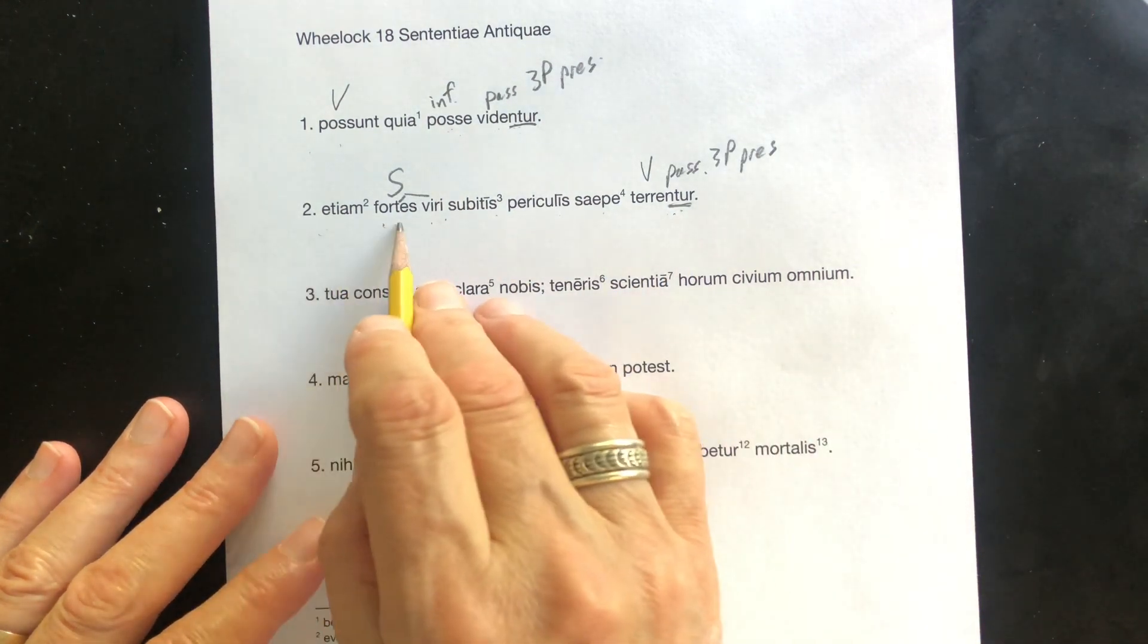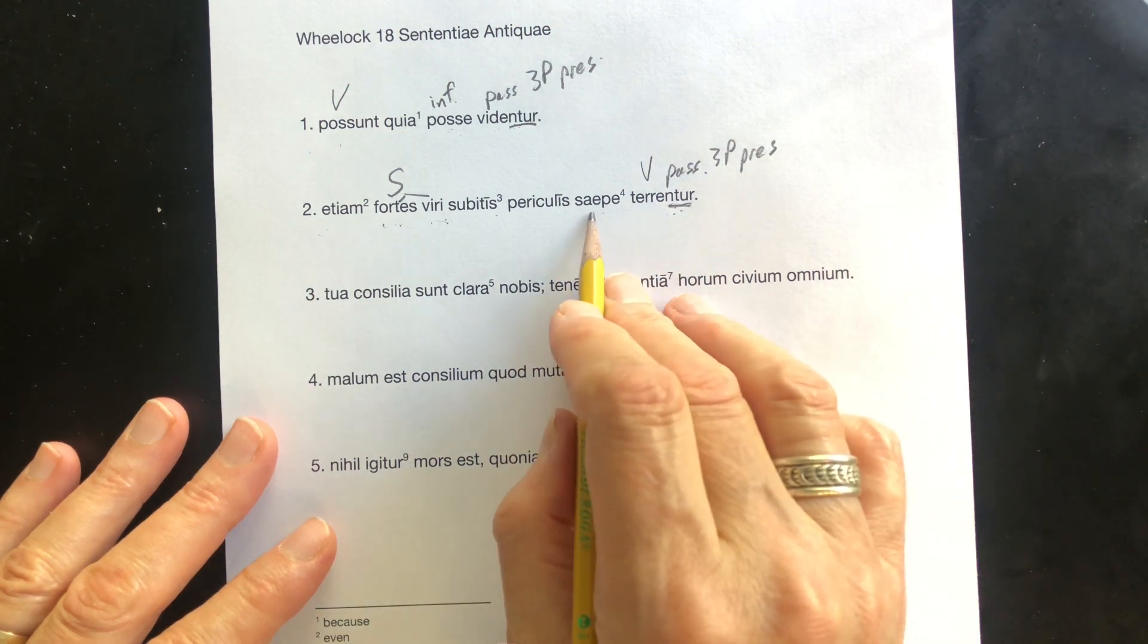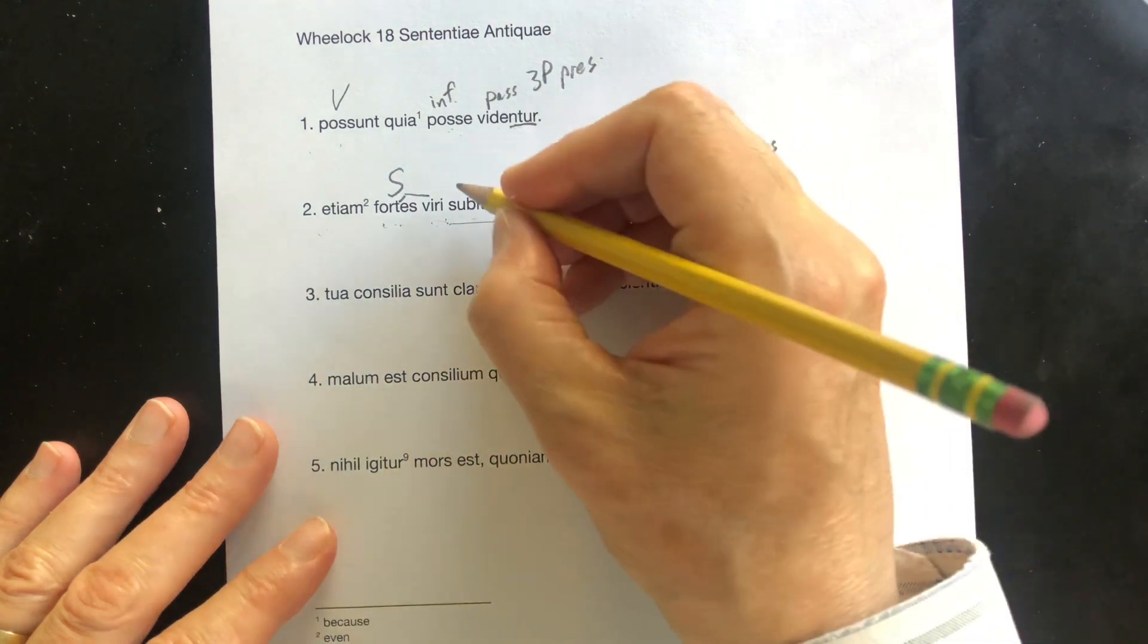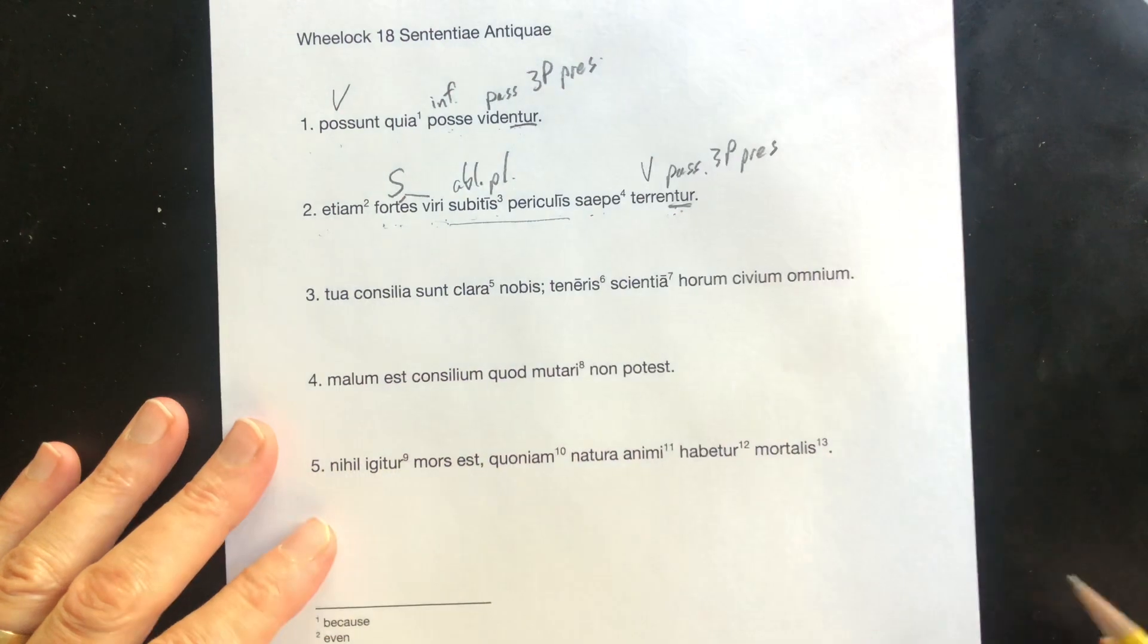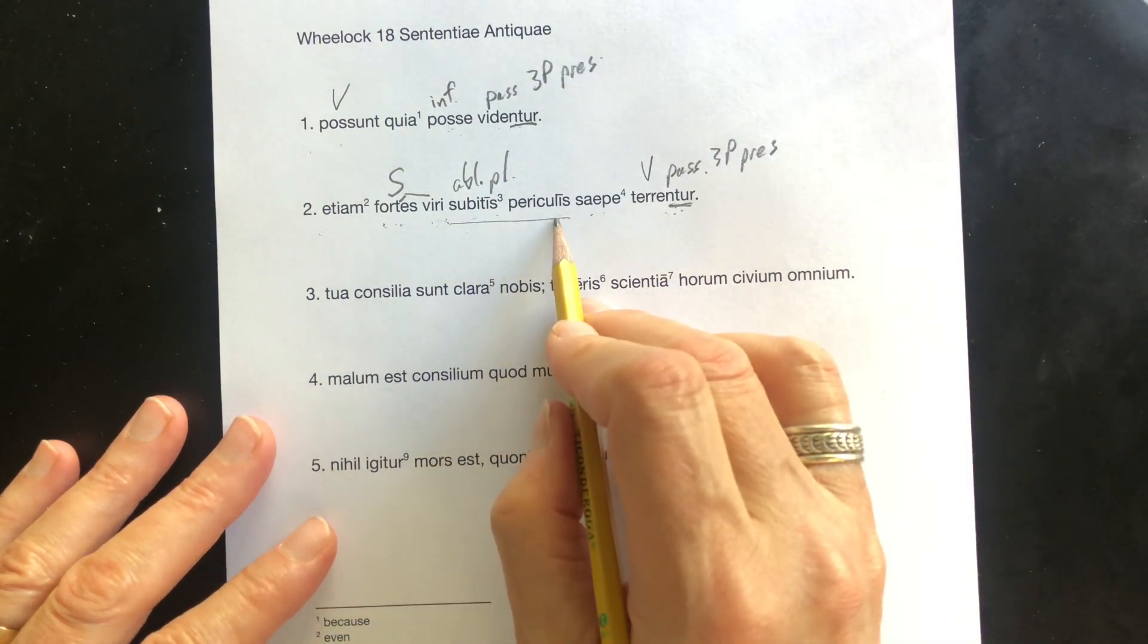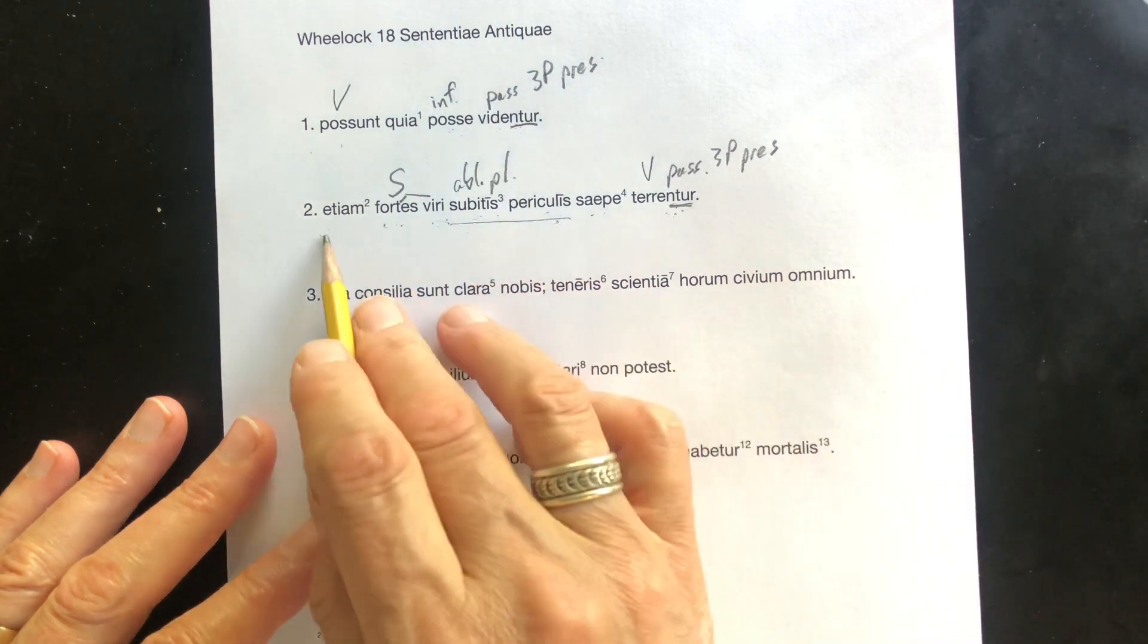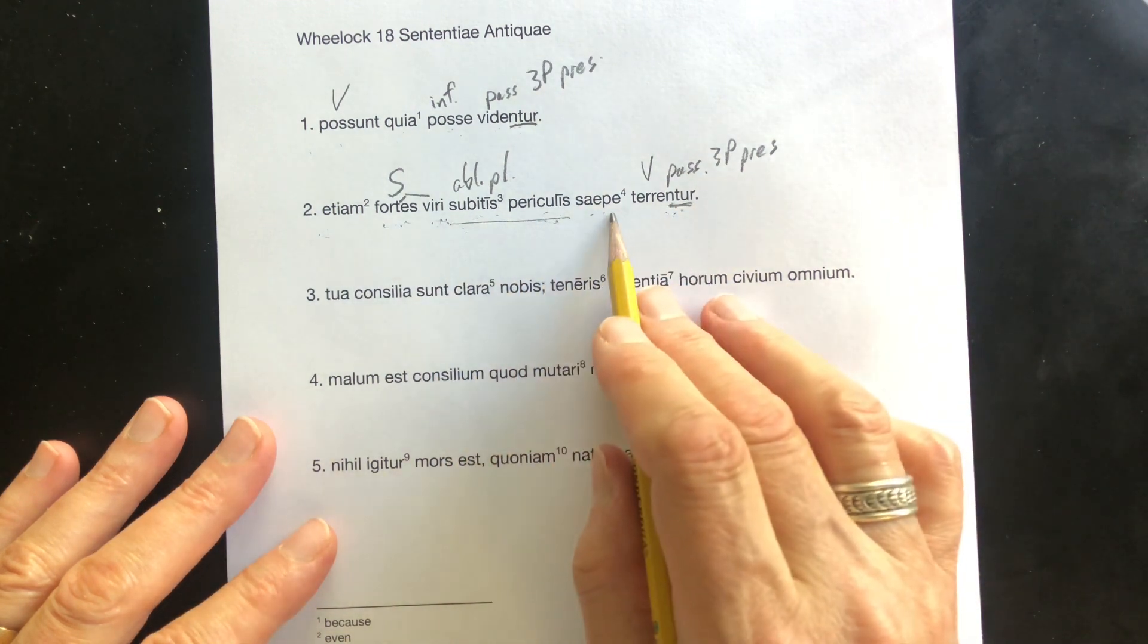Even brave men are terrified. Saepe, often. And then, let's take a look at this. I'm calling this ablative plural. See a passive verb form? Look for the ablative. They are terrified by sudden dangers. Even brave men are often terrified by sudden dangers.